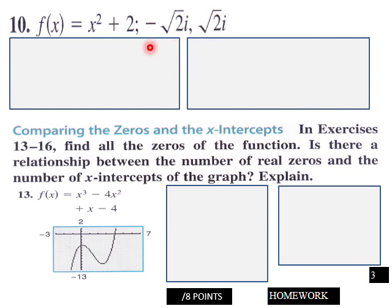Page three, same thing. Find these zeros. Then find all the zeros of this function. Is there a relationship between the number of real zeros and the number of x-intercepts of the graph explained? These are your explanation boxes.